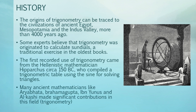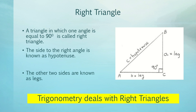Many ancient mathematicians like Aryabhata, Brahmagupta, Ibn Yunus, and Al-Kashi made significant contributions in this field. Now let us talk about right triangles. A triangle in which one angle is equal to 90 degrees is called a right triangle. The side opposite the right angle is known as the hypotenuse. In our figure, take note that opposite our right angle is what we call the hypotenuse.